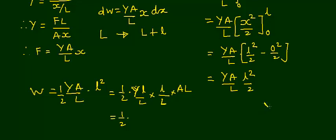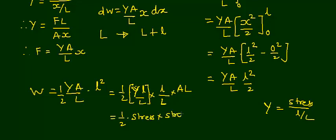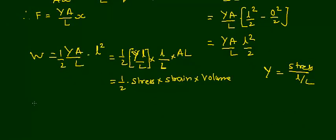We know that Y = stress / (l/L), so Y · (l/L) equals stress. Also, l/L is strain, and cross-sectional area A times length L gives the volume of the wire. Therefore, the total elastic potential energy U = (1/2) · stress · strain · volume of the wire.